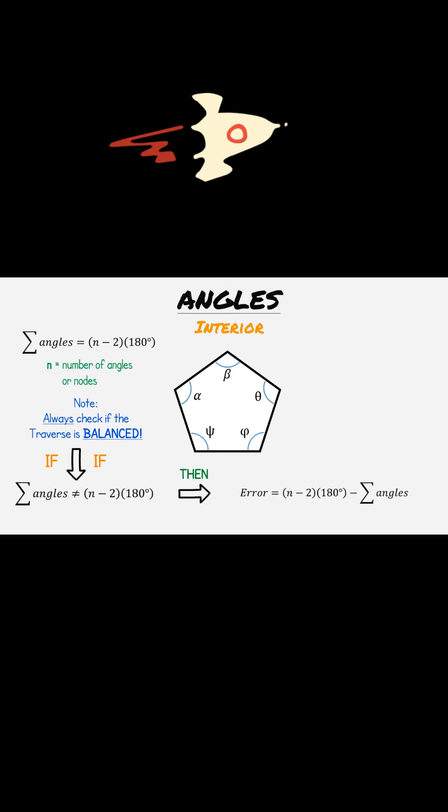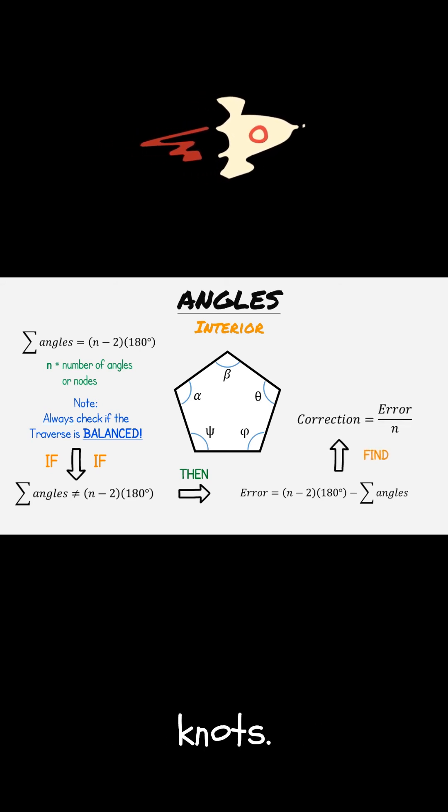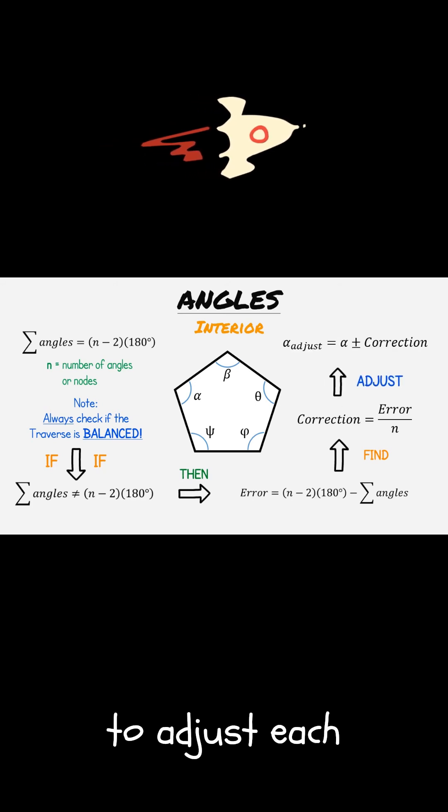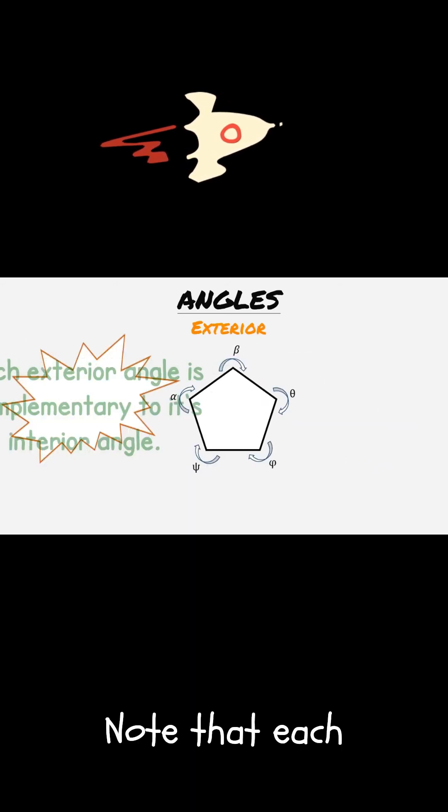The correction needed to either add or subtract to each angle is determined by dividing that total error by the number of knots. Finally, that correction would be used to adjust each interior angle.